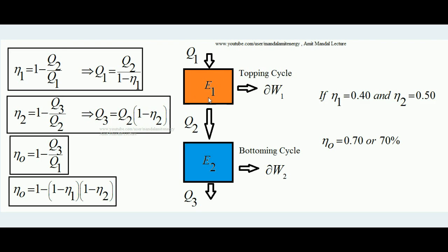The efficiency of the first heat engine is η1 = 1 − Q2/Q1. I am not elaborating on the entire theory of heat engine here because I believe you all know what a heat engine is — I am just refreshing your knowledge regarding the efficiency of the engine. So the efficiency of the topping cycle is η1 = 1 − Q2/Q1.